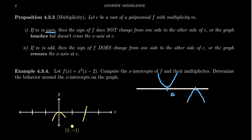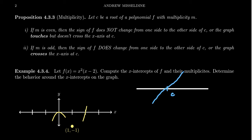When the multiplicity is odd, you get something that looks like an odd monomial near x = c. The function will either go from negative to positive or from positive to negative — it switches its sign. So when m is odd, the sign of f does change from one side of c to the other, meaning the function will cross the x-axis. To summarize: even multiplicity → touch the x-axis but don't cross; odd multiplicity → cross the x-axis.